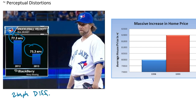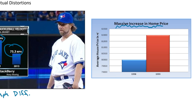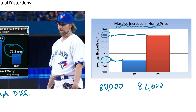The same issue appears in the second example: average house price in euros. The title says there's a massive increase, and visually in 1998 it looks way down while in 1999 it looks like it tripled. But looking at the actual numbers, it only went from 80,000 to 82,000 — a two thousand dollar increase. Still an increase, but nowhere near three times.